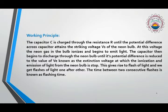The capacitor then begins to discharge through the neon bulb until its potential difference is reduced to the value of VE, also known as extinction voltage. At this point, the ionization and emission of light from the neon bulb stop, which gives rise to the flash of light and we get flashes of light one after another. That's how we will get flashes in this experiment. The time between two consecutive flashes is known as the flashing time.